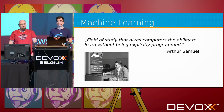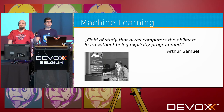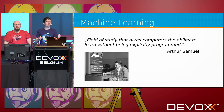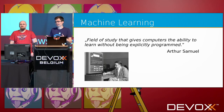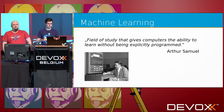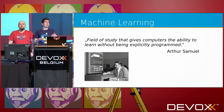Let's start with some simple definitions. The first one is by Arthur Samuel, one of the founding fathers of AI. According to Samuel, machine learning is a field of study that gives computers the ability to learn without being explicitly programmed. In the picture you can see Arthur Samuel playing checkers with the computer he built — this computer was able to learn how to play checkers by playing with human players.